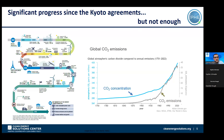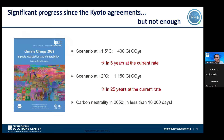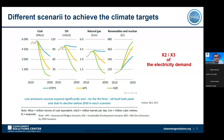Since Kyoto, significant progress has been made, but it is not enough. CO2 emissions are still growing — even the COVID dip was only due to reduced activity. To meet the Paris Agreement's 1.5°C scenario at current emission rates, we only have six years left. At the 2°C scenario, we have only 25 years. We really need to speed up and act rather than just talk.